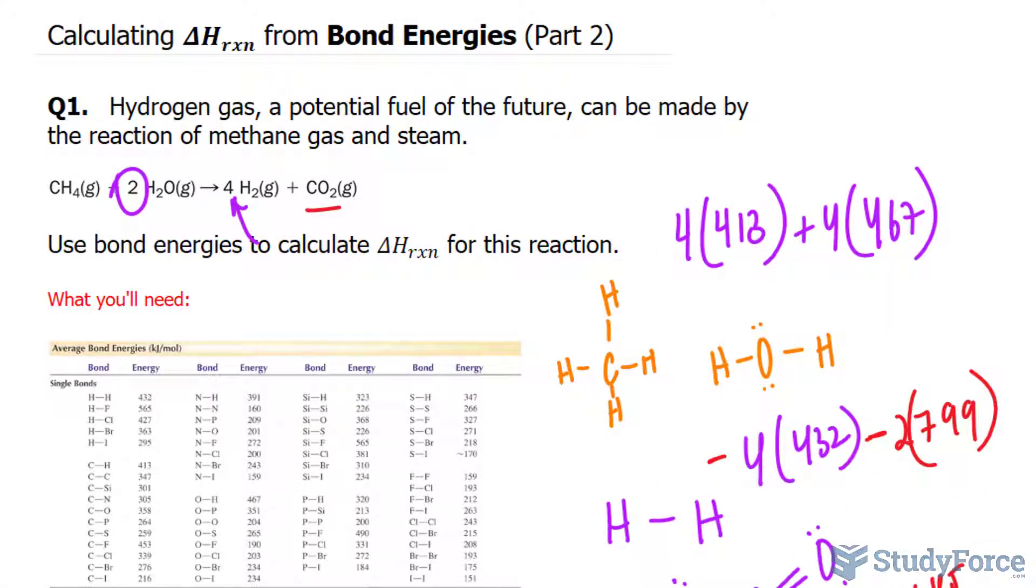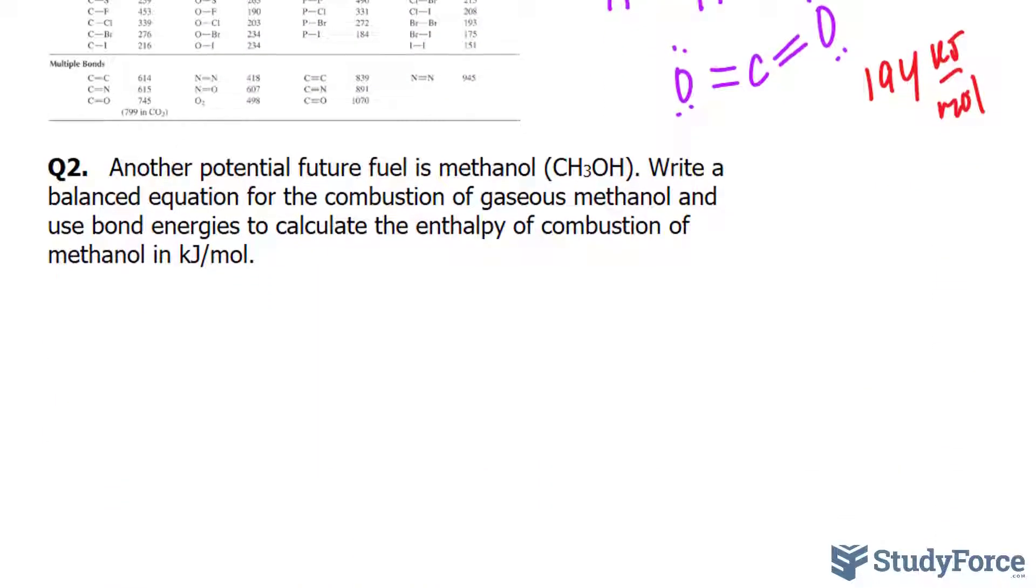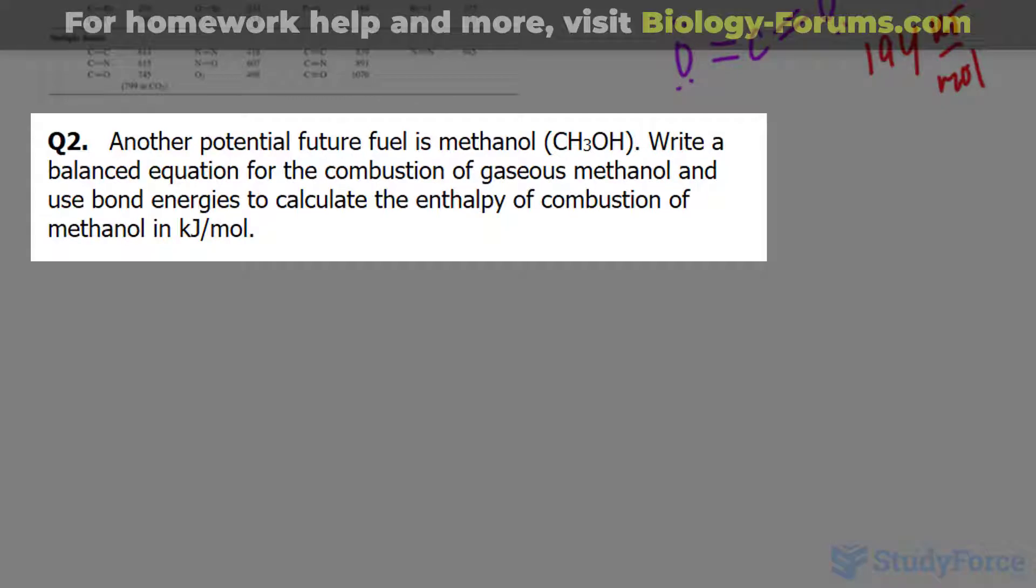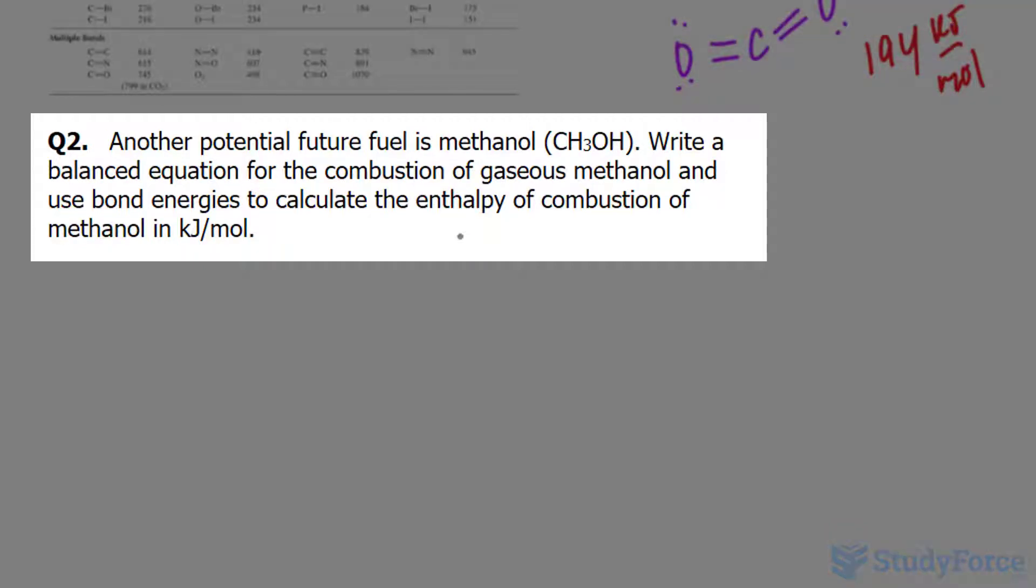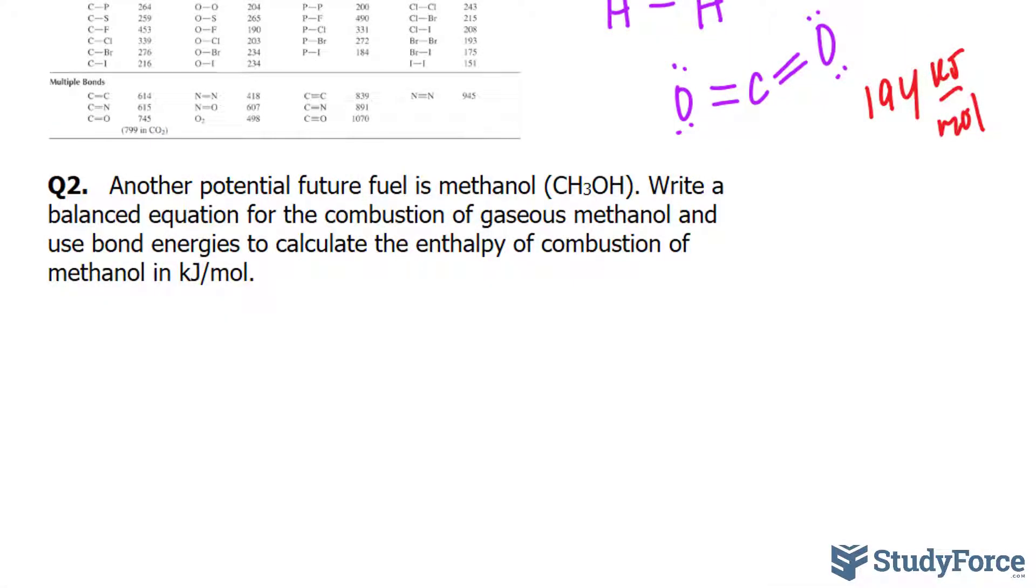In part 2 of this series, where we calculate the change in enthalpy from bond energies, we ended up with question 2, which asks: another potential future fuel is methanol, and it has the chemical formula CH3OH. Write a balanced chemical equation for the combustion of gaseous methanol, and use bond energies to calculate the enthalpy of combustion of methanol in kilojoules per mole.